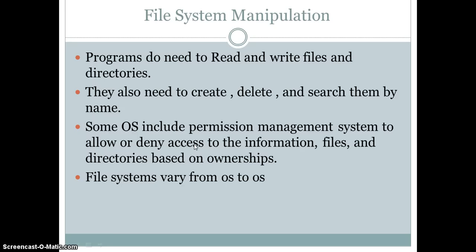Some operating systems include a permission management system to allow or deny access to files and directories based on ownership. For example, in a multi-user network, if some files are at your dedicated server and you are the only owner, the operating system gives you the facility to apply constraints that allow specific users to gain access to those files while denying others. File systems vary from operating system to operating system — Windows file systems may differ from those of Linux or Macintosh.